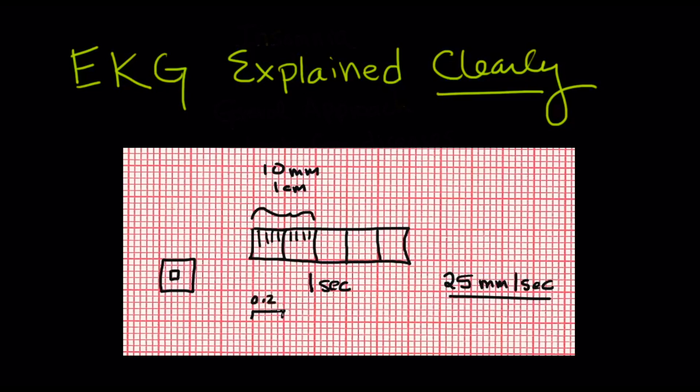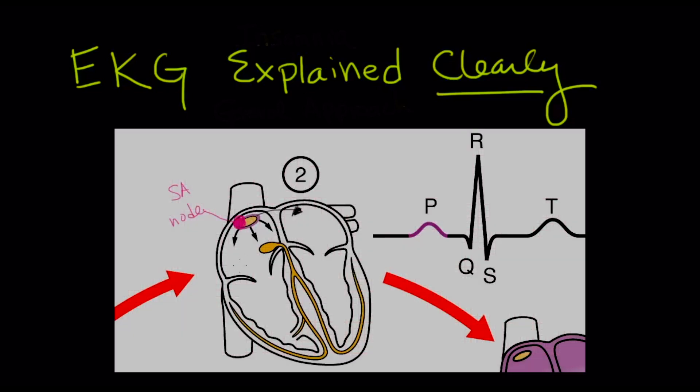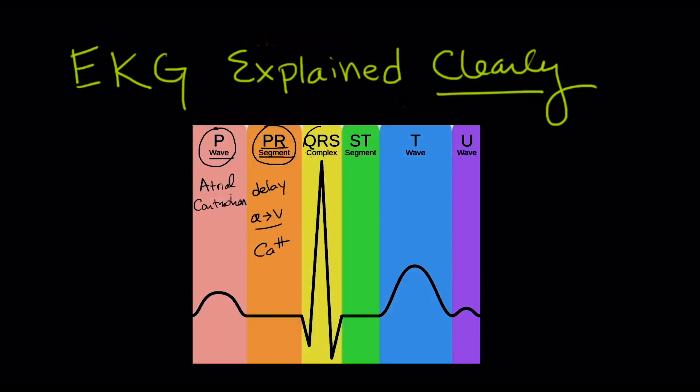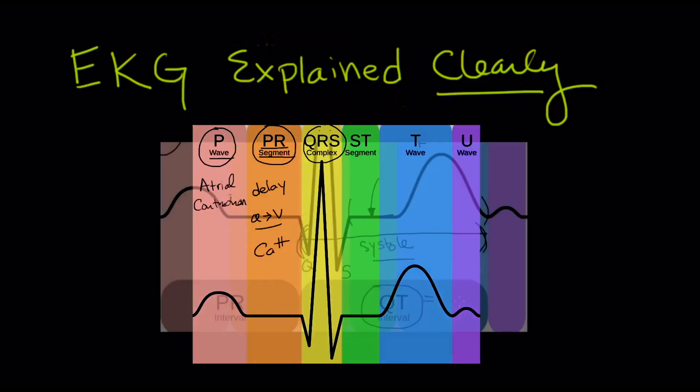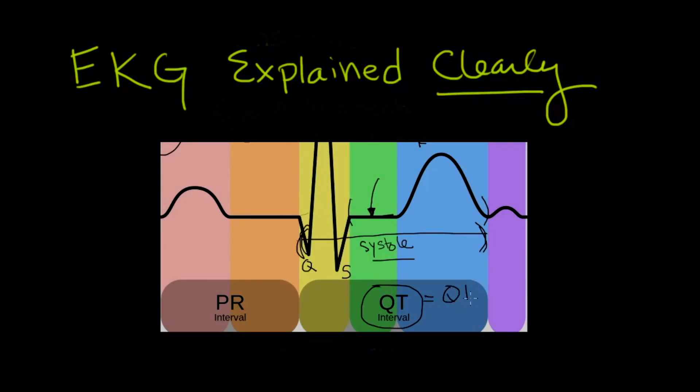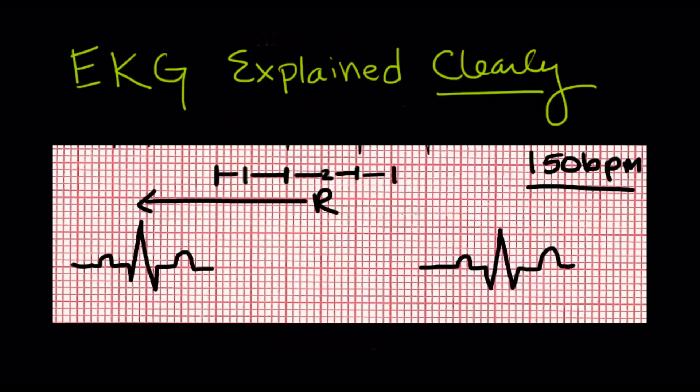Next are specifics on EKG tracing: the P wave, the QRS complexes, the QT interval, the R-to-R interval, and more.